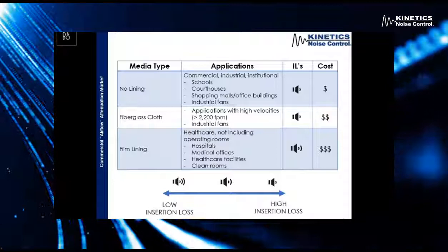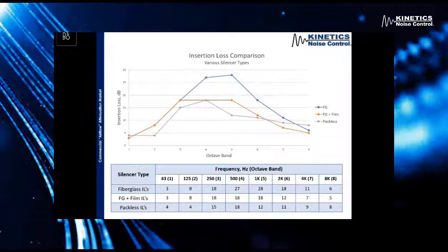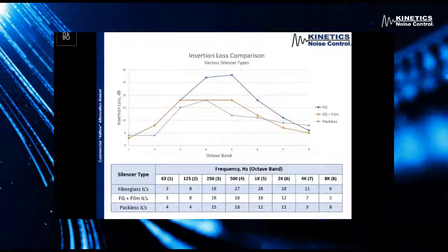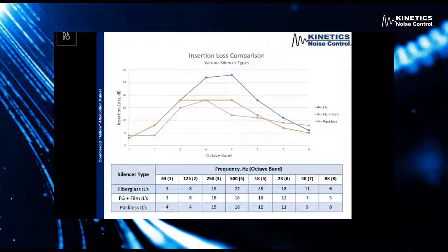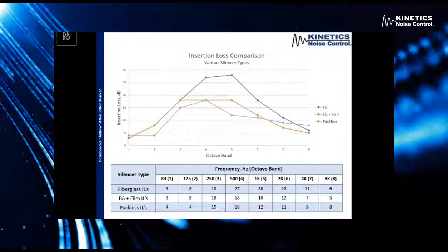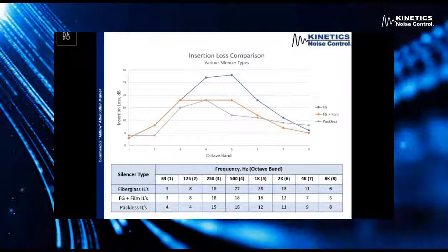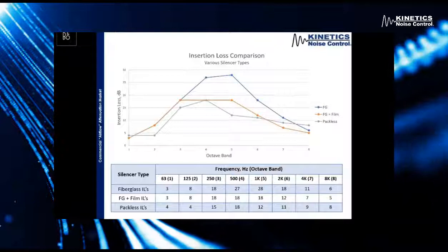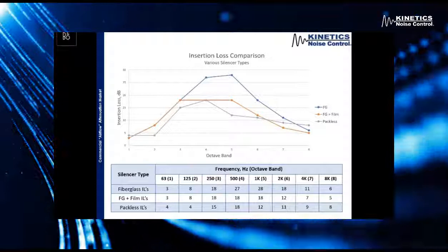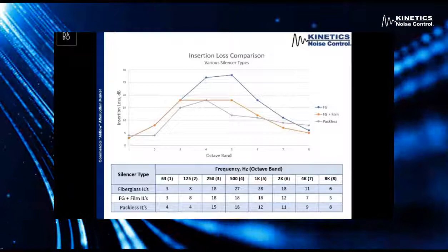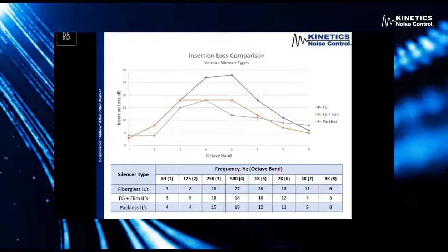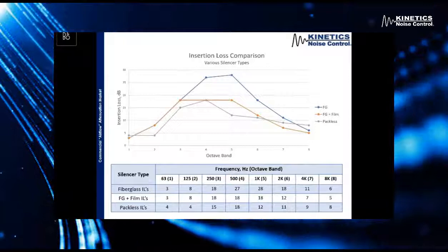To reiterate that further, here we have a graph that shows the difference in insertion loss performance of the three types of silencers. Looking at the blue line — that's a standard fiberglass silencer — you can see that especially through the mid and high frequency bands, we're going to get the best insertion loss performance. As you move to a silencer with a Tedlar or film lining, it degrades performance in the mid to high frequency bands. And as you move to the packless, pretty much through all frequencies, we are going to see a degradation of performance — it's just not going to perform as well. Keeping in mind that these silencers are reserved for very specific applications, we don't want to add unnecessary costs to a project by adding these premium products.